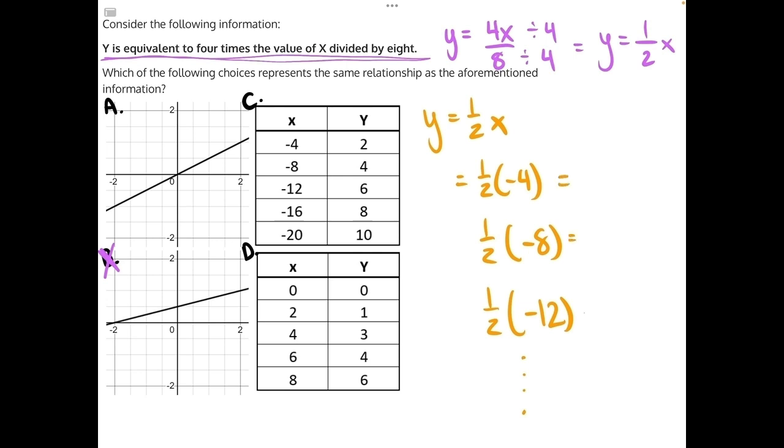These values should be half of negative 4 would be negative 2, half of negative 8 would be negative 4, and then half of negative 12 would be negative 6. Already, all three of these values are incorrect because they are not negative. So that means answer choice C is incorrect.